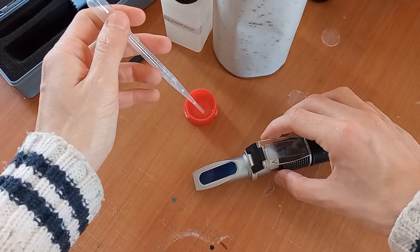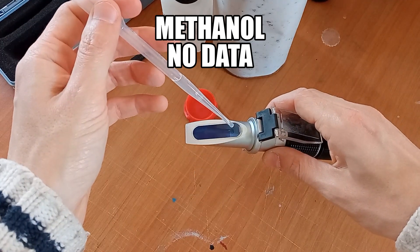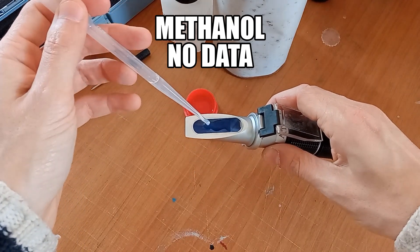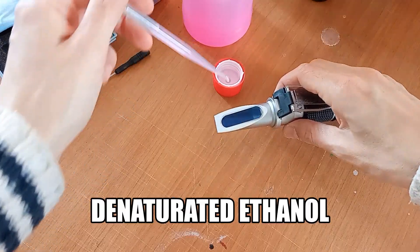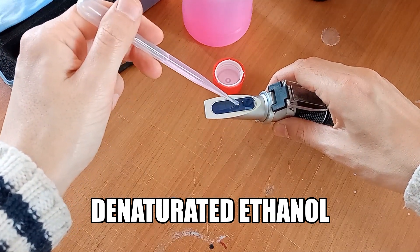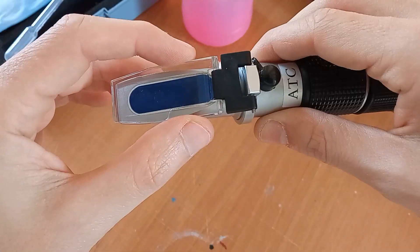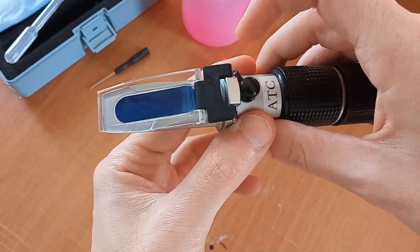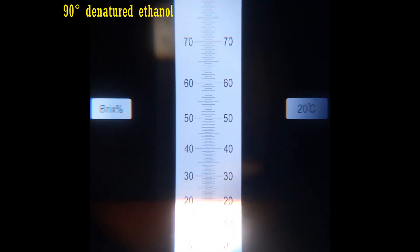Let's start with sample, methanol first. Unfortunately, methanol is less than zero BRIX, not shown. Next is 90 degree denaturated ethanol. Refractive index is 20 BRIX.